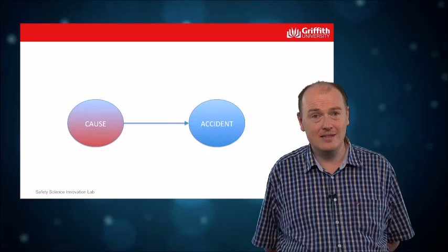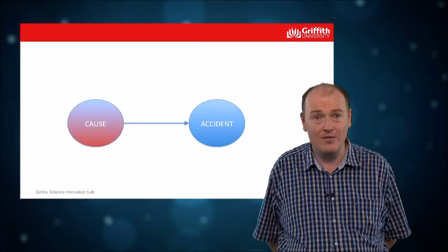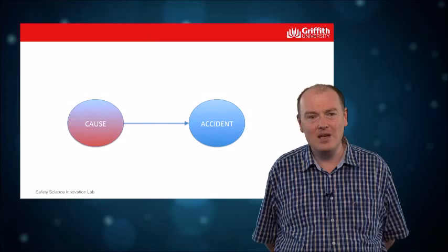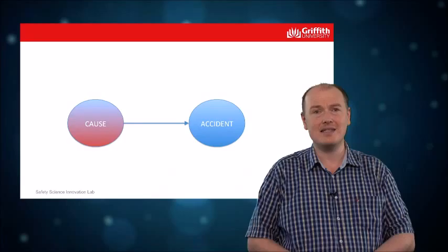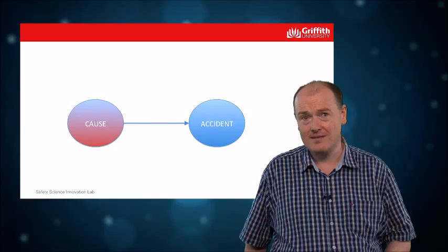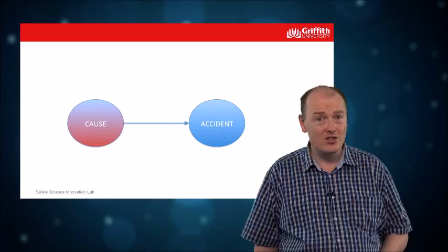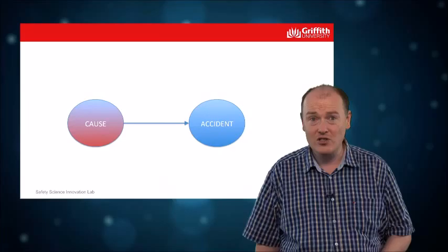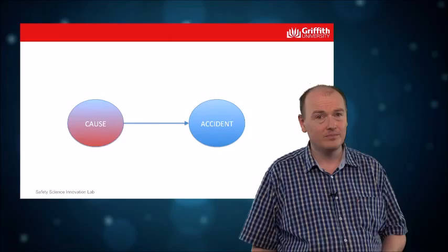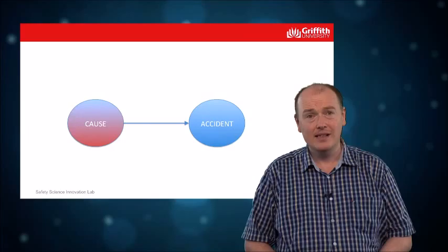Now usually we mean something a little bit deeper than that, because we don't just accept always that something happening before something else is a cause. We might consider that to be coincidence or, if it happens a lot of times, correlation, without necessarily being cause. So the next test that we tend to apply is something called counterfactuals. A counterfactual says that something causes something else if stopping the first thing stops the consequence.